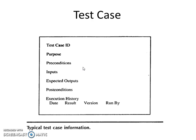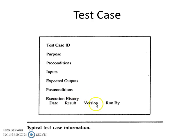A test case will have: a unique test case ID, the purpose or condition being tested, precondition, input, expected output, post condition, and an execution history — which records the date, result of execution, version under test, and who executed the test case.